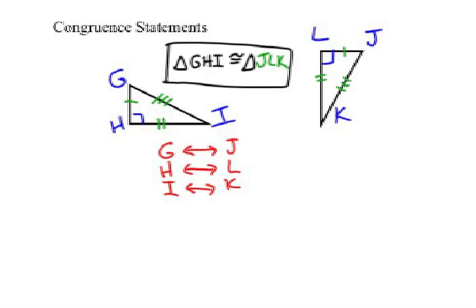So for the angles, angle G must be congruent to what other angle? That's right, angle J. Angle H is congruent to what angle? Right, angle L, that's where the right angle is. And angle I is congruent to angle K.